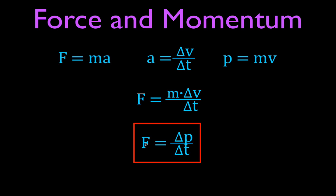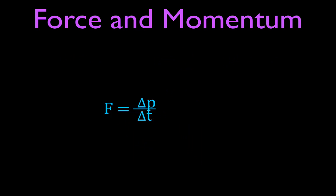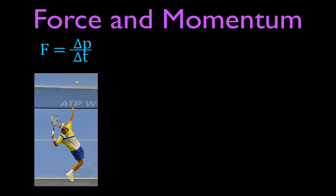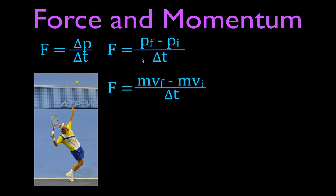We're going to calculate, in a couple of problems, how much force is applied to change the momentum or velocity of an object. The first problem involves a professional tennis player serving. Our equation is force equals change in momentum over change in time, which expands to: force equals momentum final minus momentum initial, divided by change in time. We can further expand to: force equals mass times final velocity minus mass times initial velocity, divided by time.